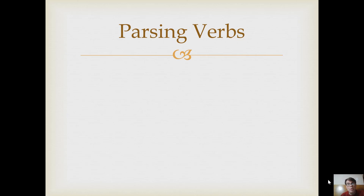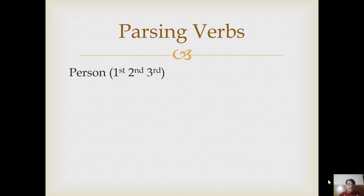Verbs have person in Greek — that means the perspective. First person singular is 'I,' the one speaking. I am speaking in the first person singular. If plural, it's 'we.' So the first person is who's speaking. Second person is who we're speaking to.